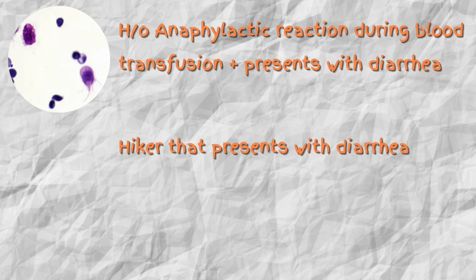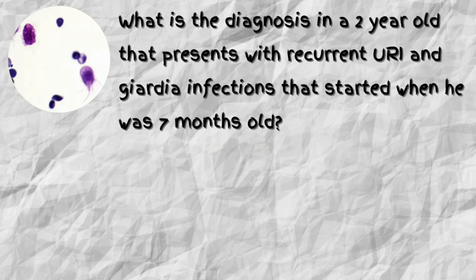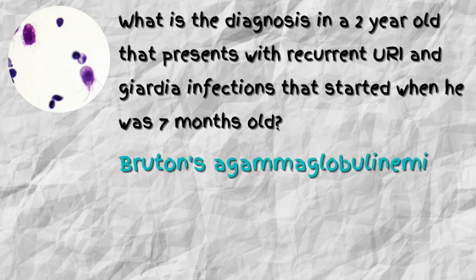What is the diagnosis in a two-year-old that presents with recurrent URIs and Giardia infections that started when he was just seven months old? If you said Bruton's agammaglobulinemia, then you are absolutely correct. Recall that immunodeficiencies are extremely high yield, and this is one way you can be tested on exam day — and this is for all steps.